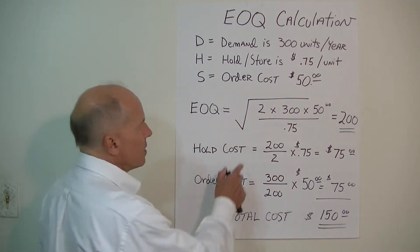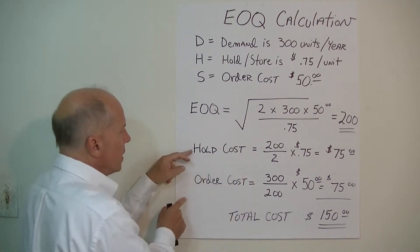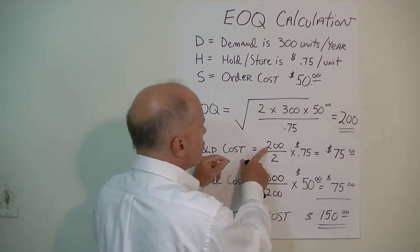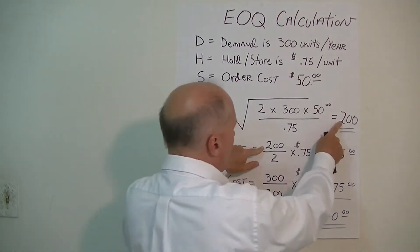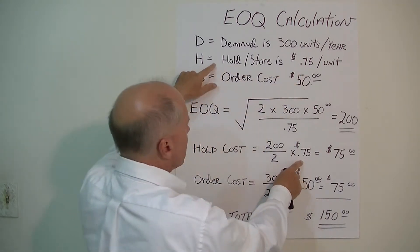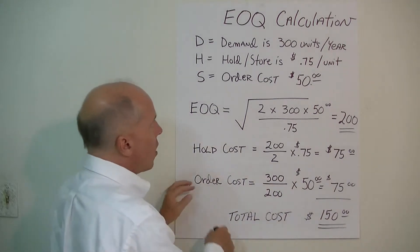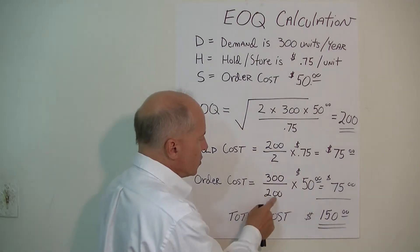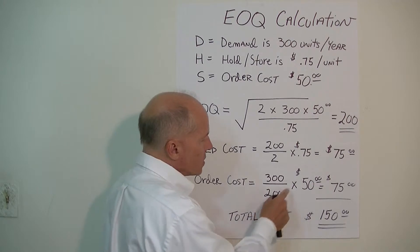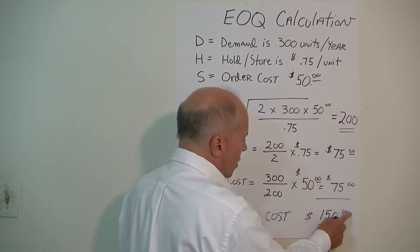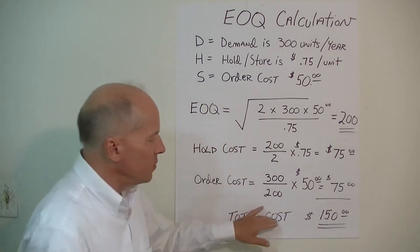We can take this information and plug it into the formulas to calculate the holding or storage cost: 200 order size divided by 2 times 75 cents holding cost equals $75. Order cost is 300 demand divided by 200 order size times $50 per order, which equals $75. Those added up is $150 total inventory cost.